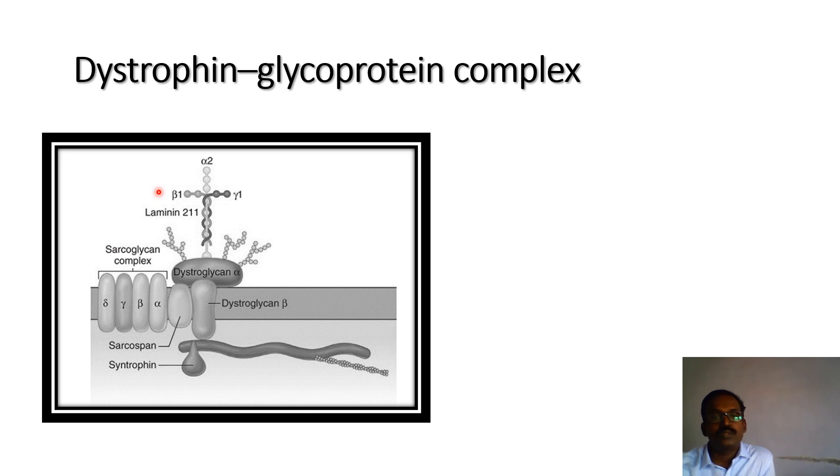Dystropin is the largest protein. It connects actin to dystroglycan β through the smallest protein, syntropin. Dystroglycan β is connected to the extracellular matrix through the merosine subunit of laminin.